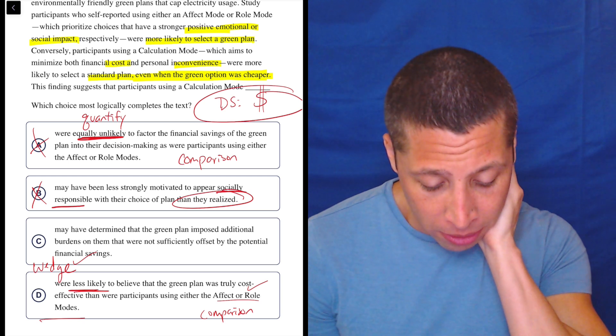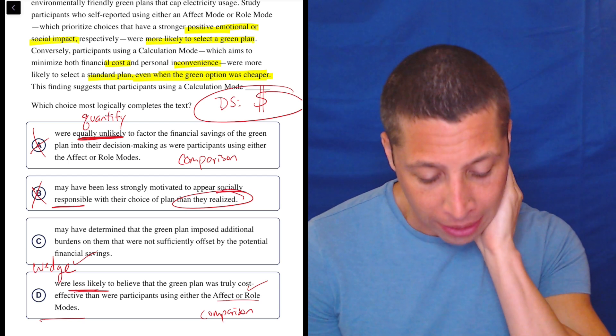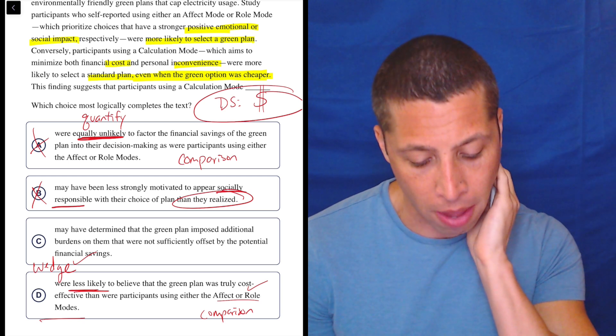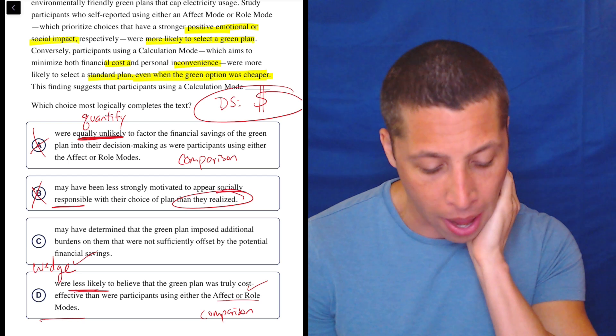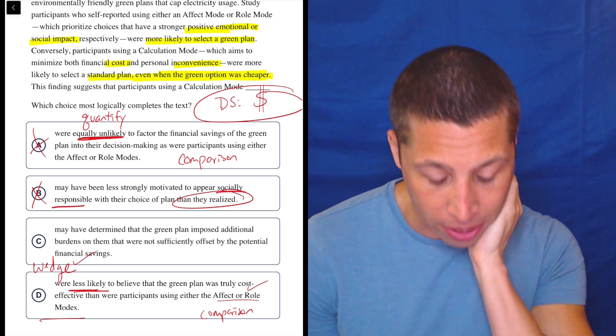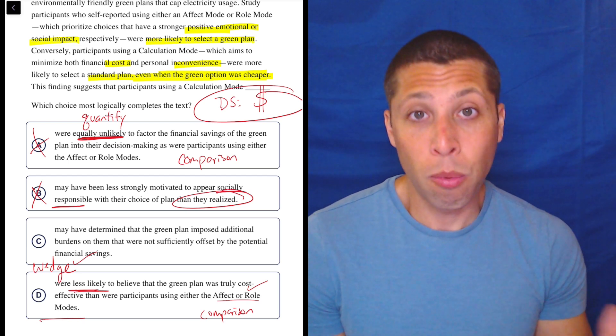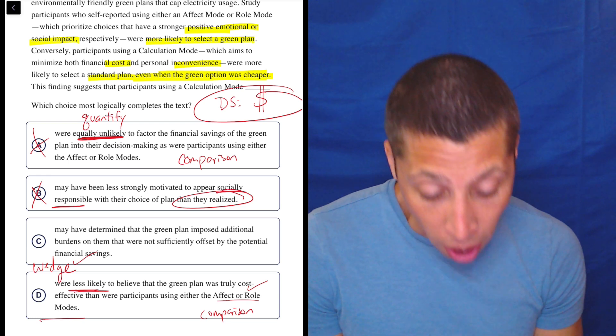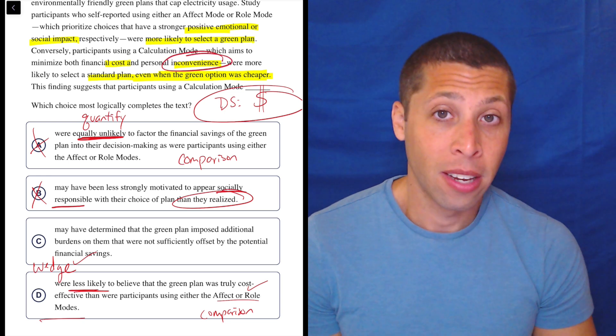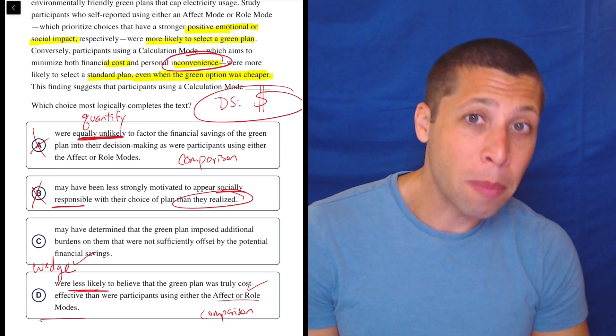Let's look and see again. May have determined, the calculation mode people may have determined that the green plan imposed additional burdens on them that were not sufficiently offset by the potential financial savings. Meaning, what are the other burdens? Well, they talk about convenience. So maybe it's cheaper, but it's going to be a bigger pain in the ass. Fine.